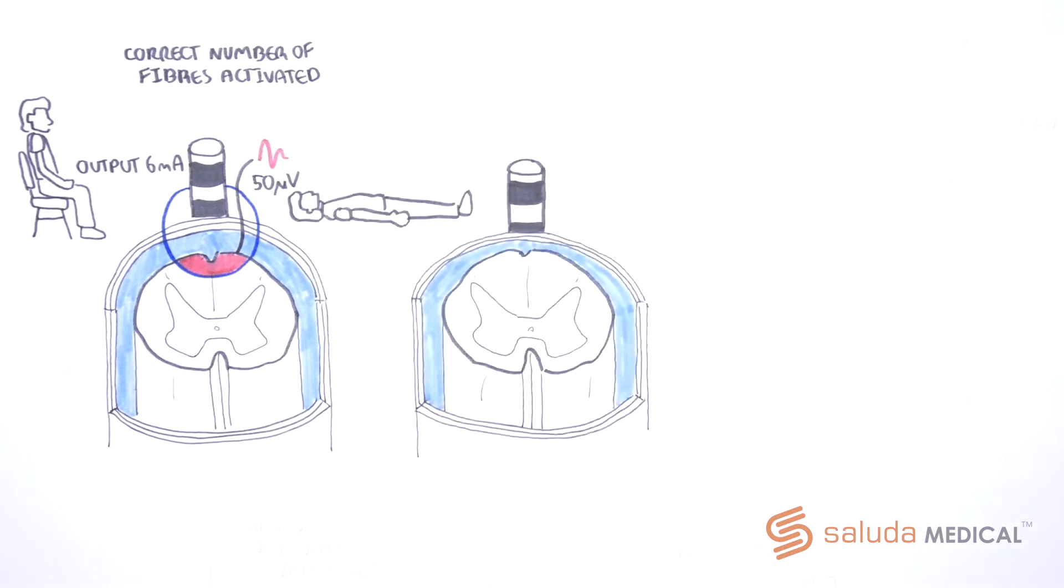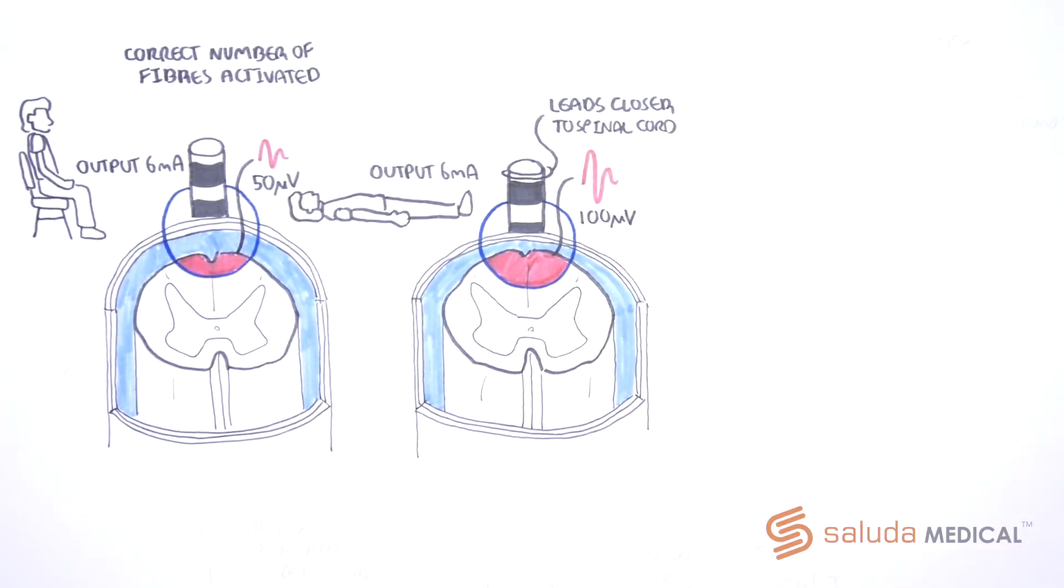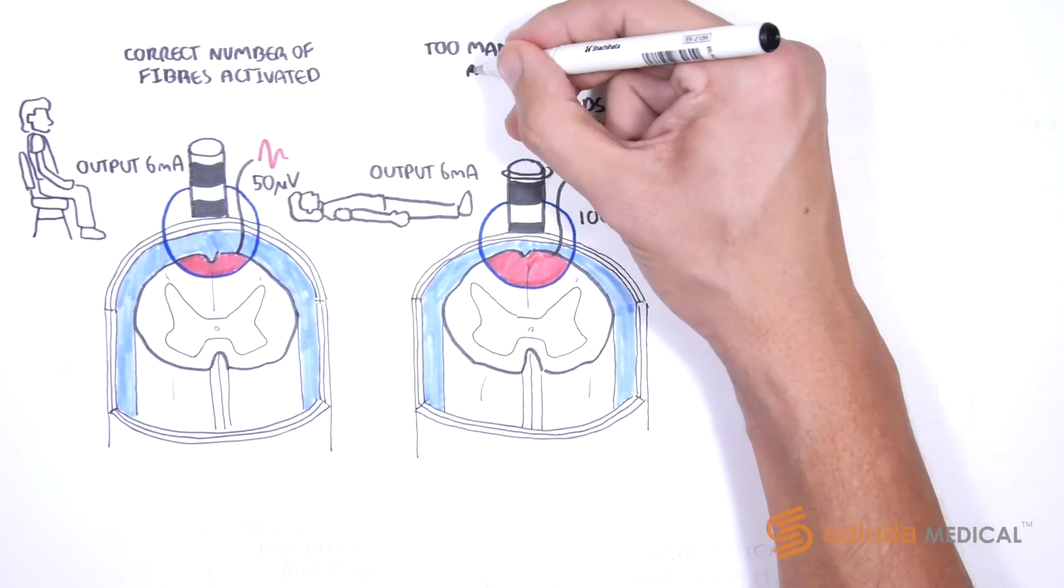However, the next moment, with the patient lying down, the 6mA pulse is now recruiting many more fibers, generating an ECAP of 100 microvolts, which is above their therapeutic window. This is because the leads have moved closer to the spinal cord.